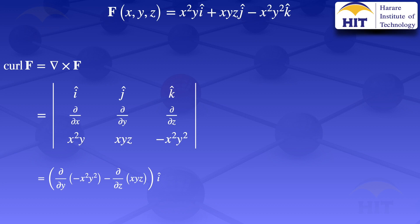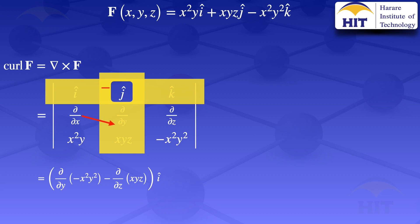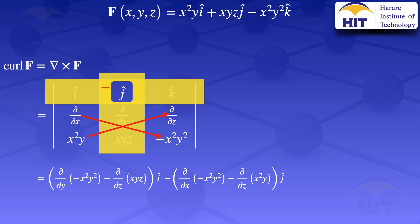We move on to the next element, ĵ. We close the row and column containing ĵ. The ĵ sits on a negative in the sign array, so we take minus the determinant of the uncovered elements: (∂/∂x)(−x²y²) minus (∂/∂z)(x²y). Since ĵ is on a negative, we write: minus [(∂/∂x)(−x²y²) − (∂/∂z)(x²y)]ĵ.